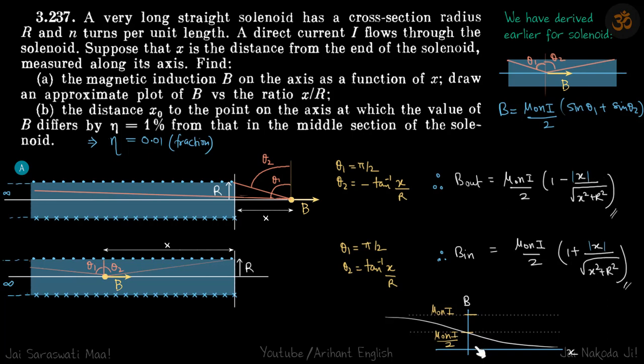As x approaches minus infinity, this will again approach 1. 1 plus 1 is 2. B inside will approach mu naught ni, which we know is the result for a field inside a long solenoid. At the edge at this point it is mu naught ni by 2. Because here x is 0, by either equation you will get b at the edge as mu naught ni by 2.